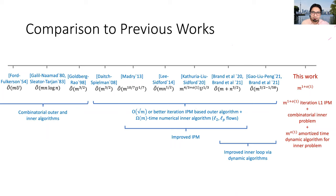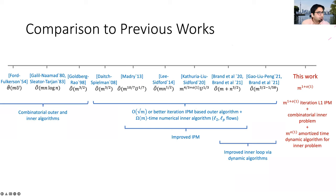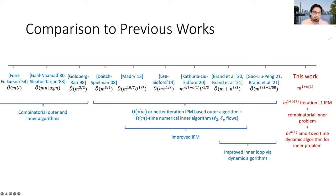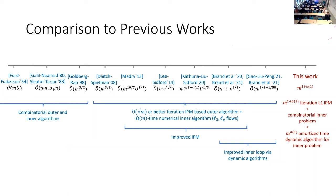Question from the audience: the Ford-Fulkerson bound is not exactly M for unweighted graphs, right? The speaker confirms: for unweighted graphs it is more efficient. For polynomially large capacity U, the bound written on the slide should actually read MF*, where F* is the total amount of flow that you can send — not MU. Thank you for catching that.